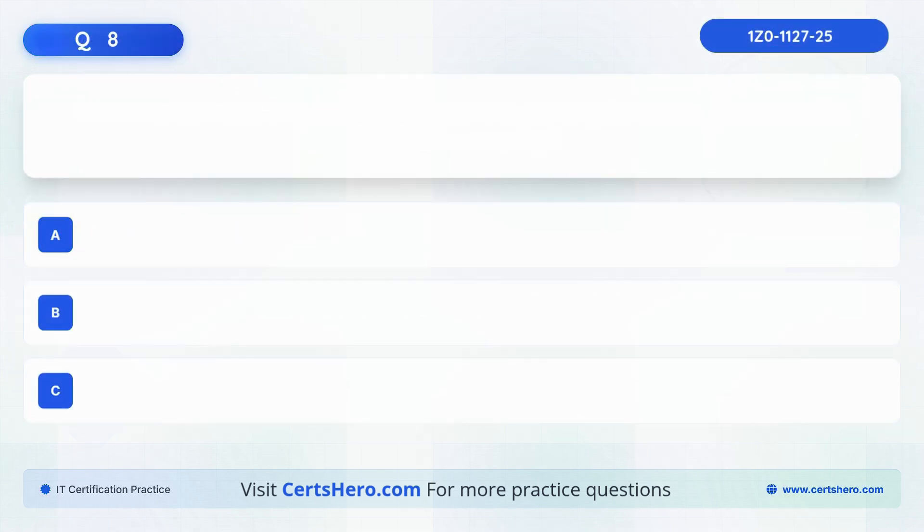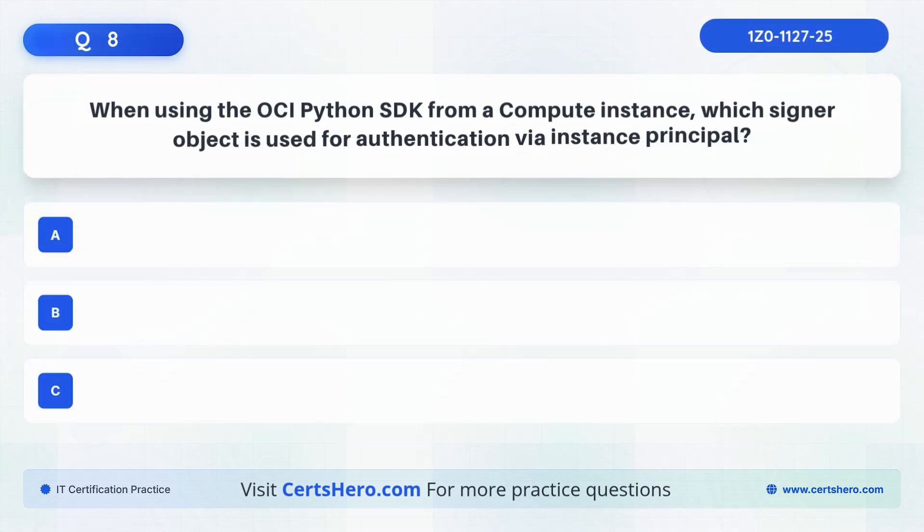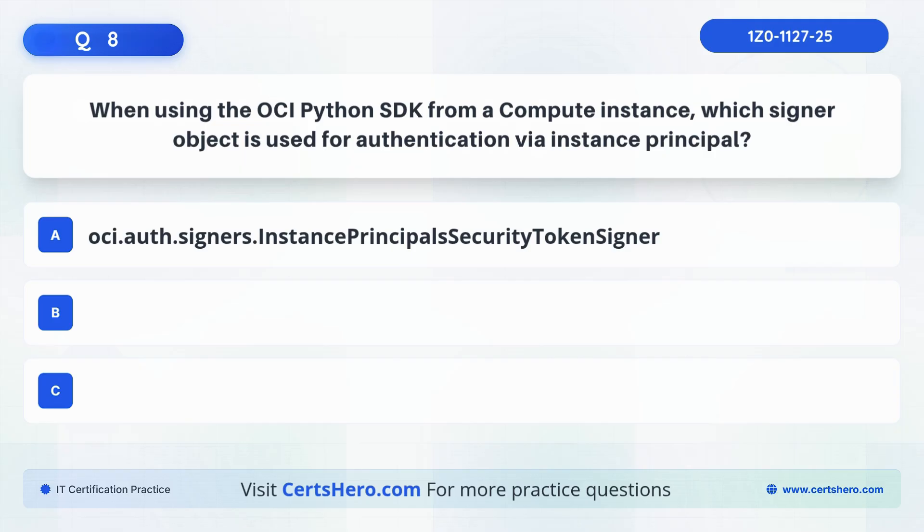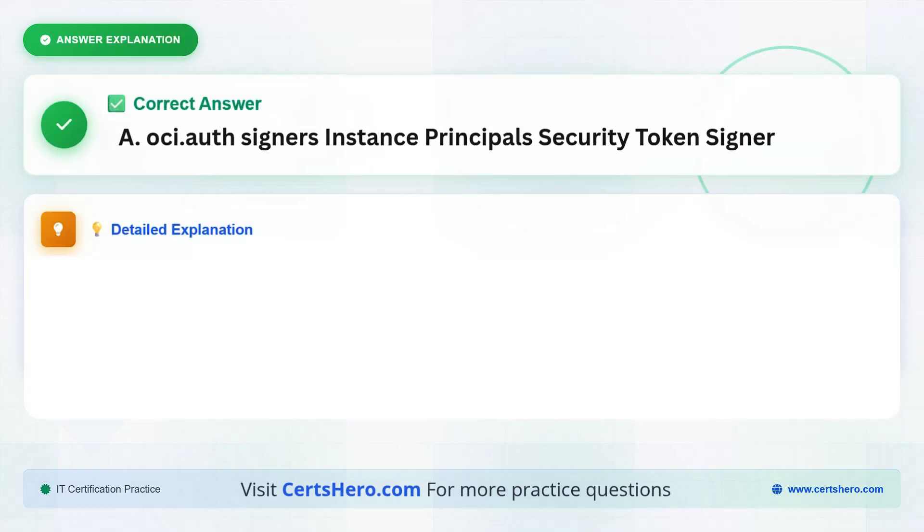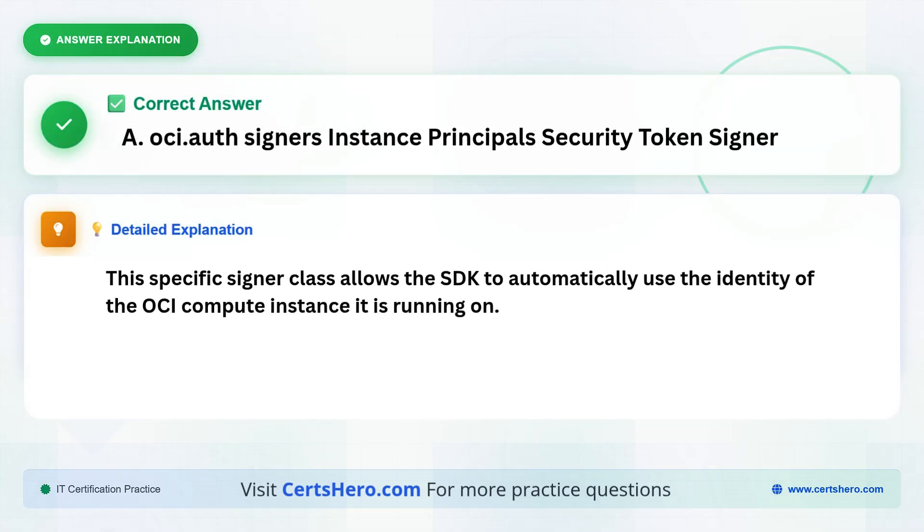Question 8. When using the OCI Python SDK from a compute instance, which signer object is used for authentication via instance principle? Is it, Instance Principles Security Token Signer, Config File Signer, or Resource Principles Signer? The correct answer is A, Instance Principles Security Token Signer. This specific signer class allows the SDK to automatically use the identity of the OCI compute instance it is running on.